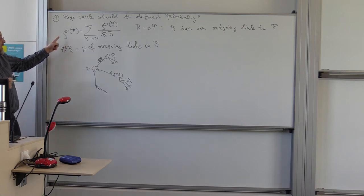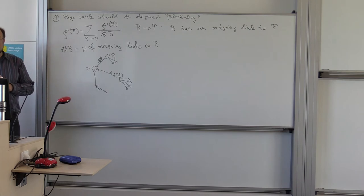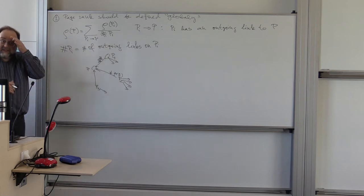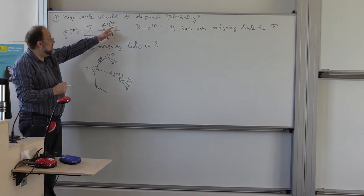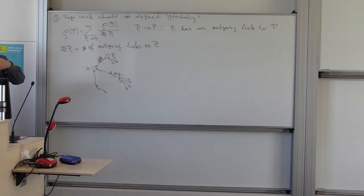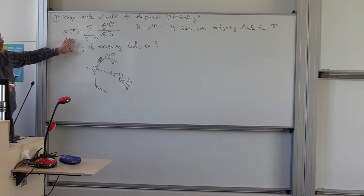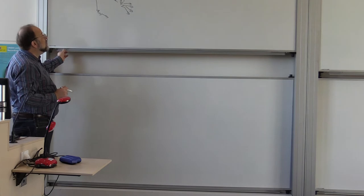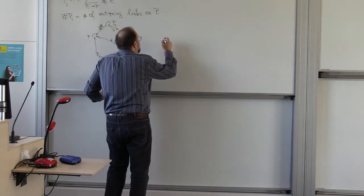Now, notice, this is not a recipe how to compute rho of P, the rank of P, because the rank appears both on the left and on the right. You have to know what rhos are on these pages in order to compute rho, so it's a circular definition. So, this is only what is usually called an implicit rather than explicit definition, namely, it's a condition what rho should satisfy to have this nice property. So it's just a condition, it doesn't tell us how to compute.